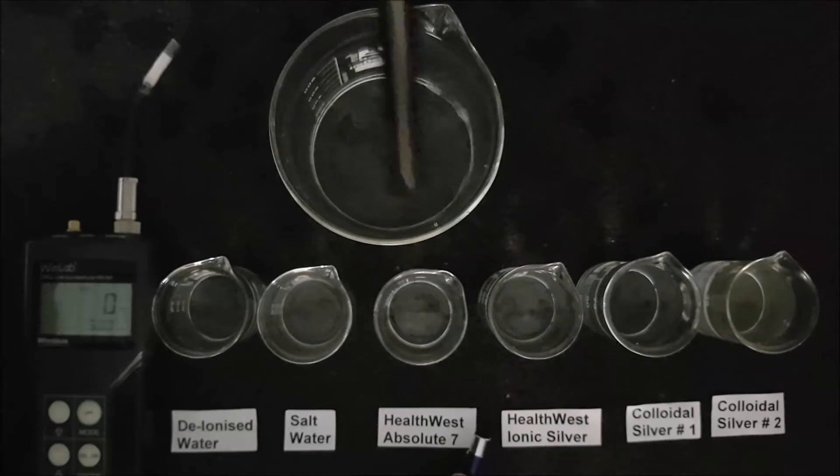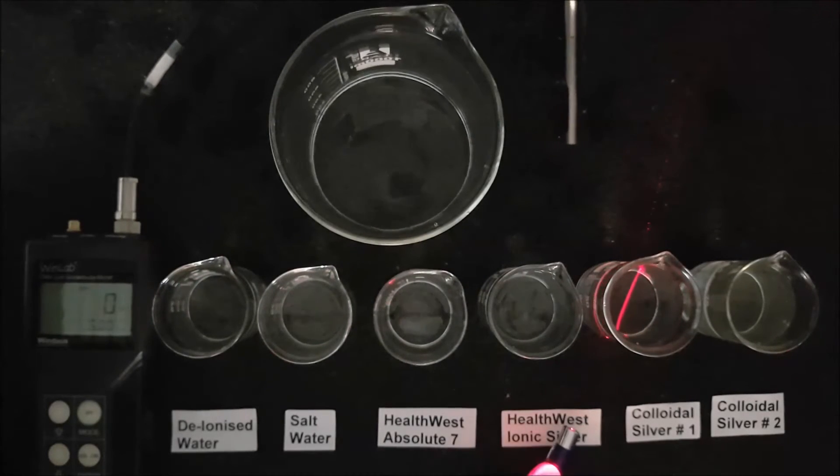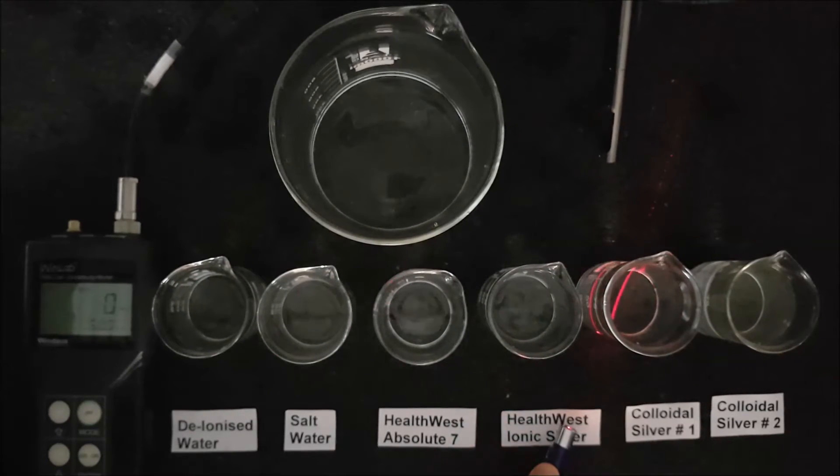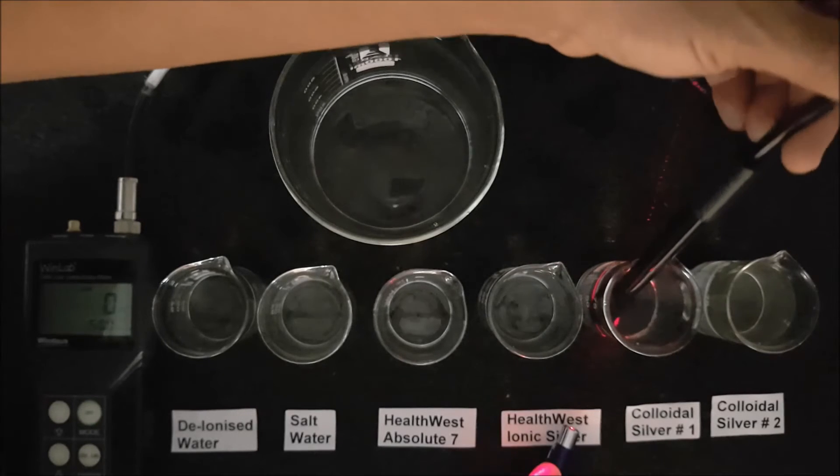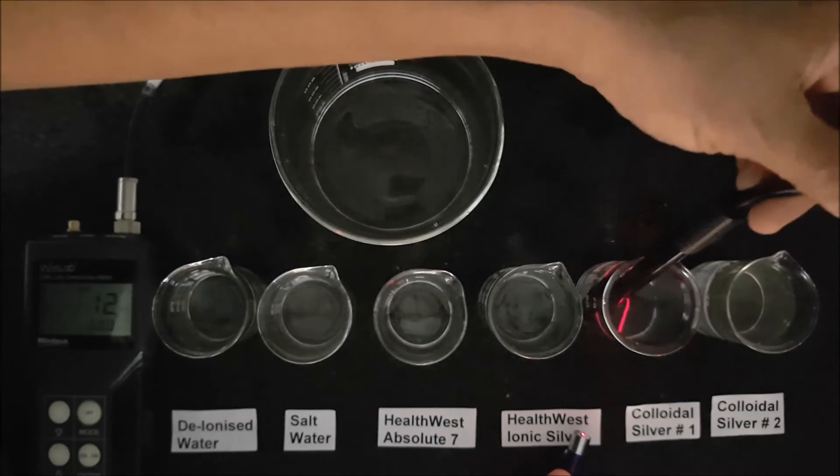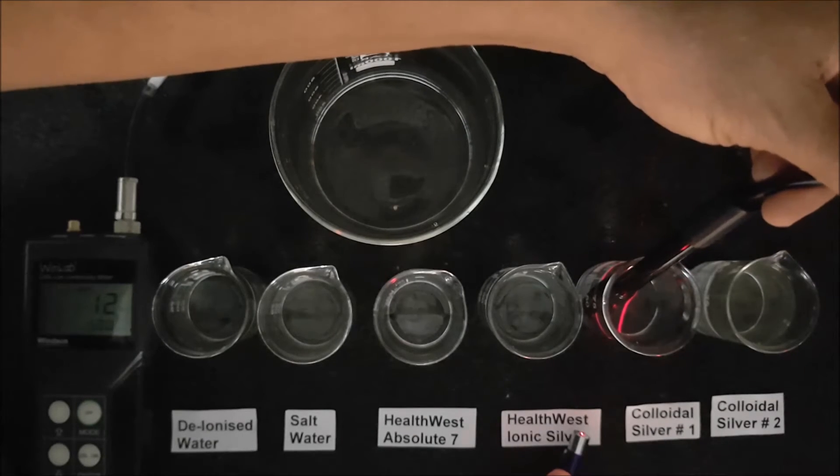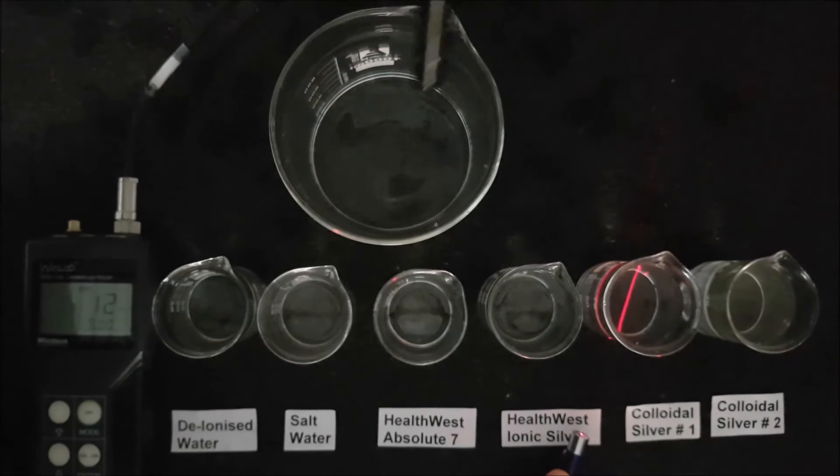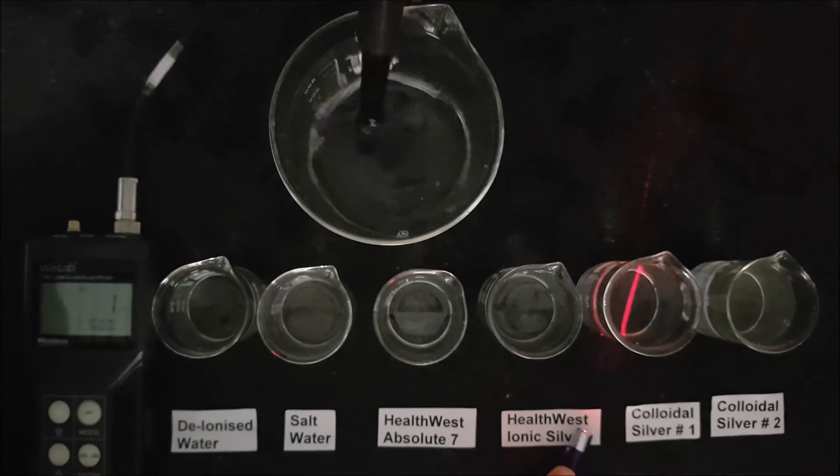As we come to the next beaker, the laser beam can be clearly seen, because this is colloidal silver, and contains particles of silver metal. It has a concentration of 12 parts per million, and the Tyndall effect is typical of what you would expect to see in these sorts of silver preparations.